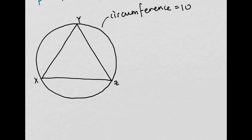It's a bit difficult right now because we don't know the lengths of any of these sides. So we're going to have to split this triangle up in a way such that we can figure out some lengths. If we draw lines from the centre of the circle to each vertex, then we know that each of those lengths is just going to be r, where r is the radius.